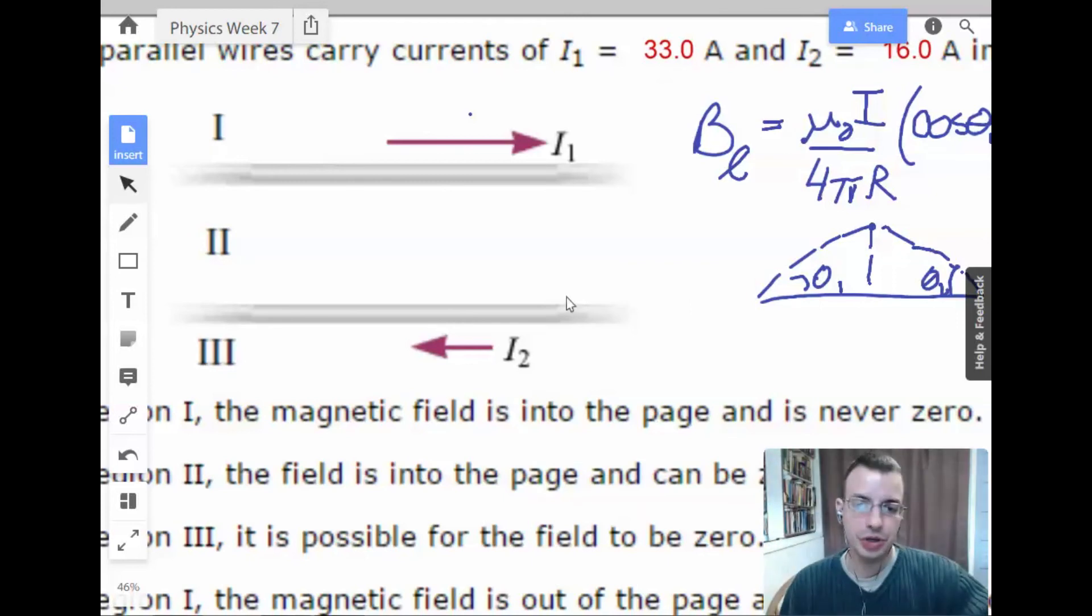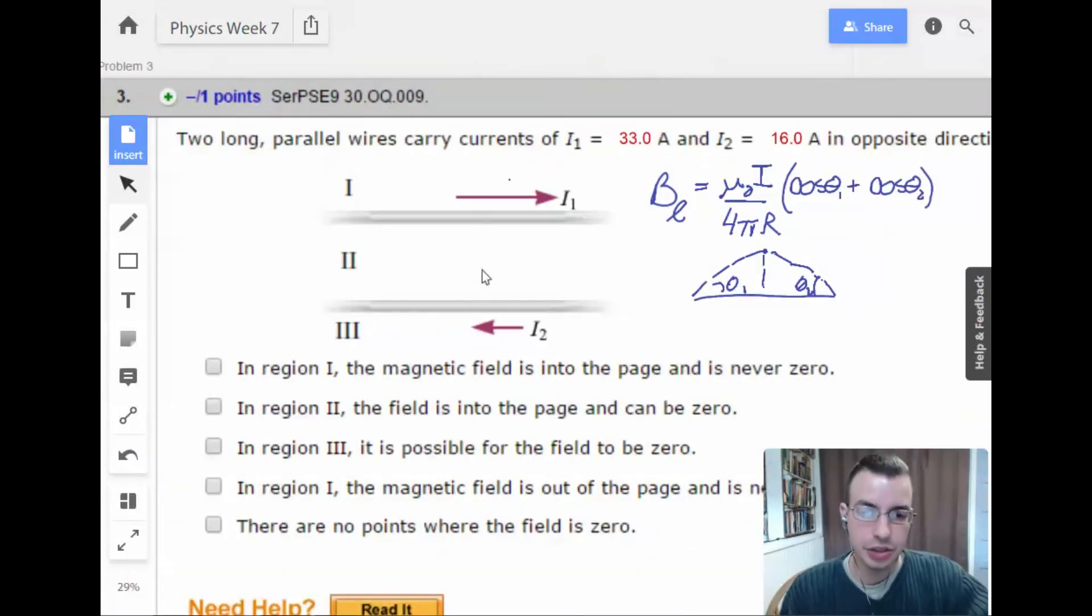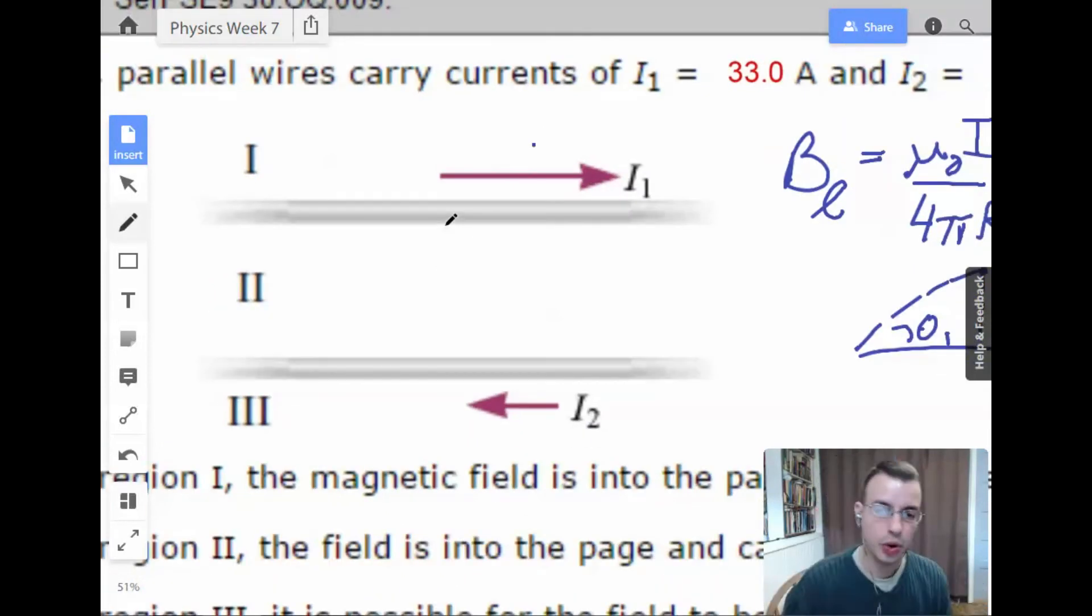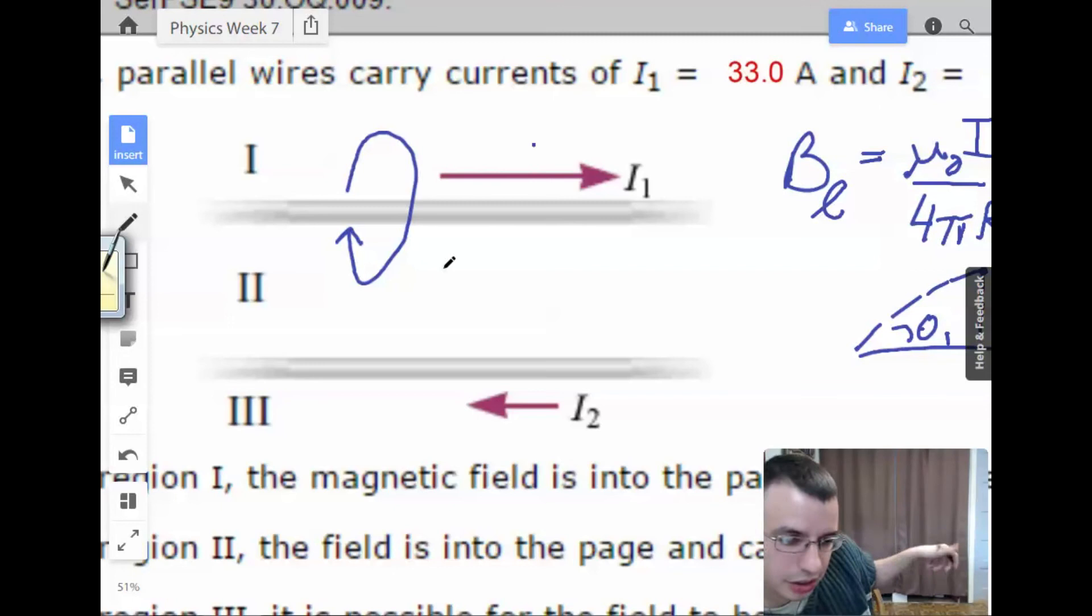So what we're going to do is we're going to look at the two wires and see what statements here have to be true. So one of the things I'm going to do is I'm going to start by drawing the magnetic fields in various regions. So I'm going to start by looking at wire one.